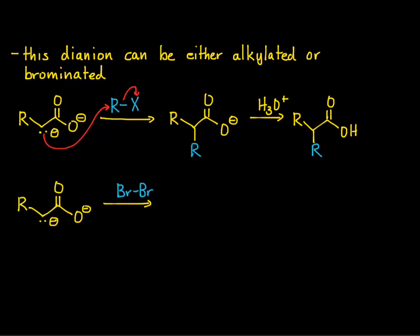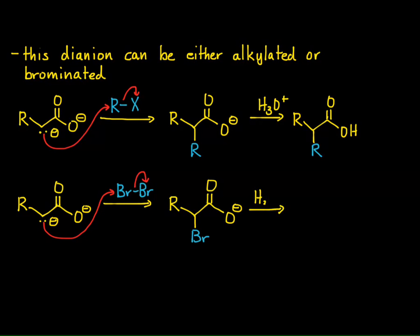We still have the same characteristics of carboxylic acids forming the enolate and reacting with bromine in that substitution-type pattern. So now we have a bromine in the alpha position, and then treating that with acid to get the alpha-brominated carboxylic acid by protonating the carboxylate.